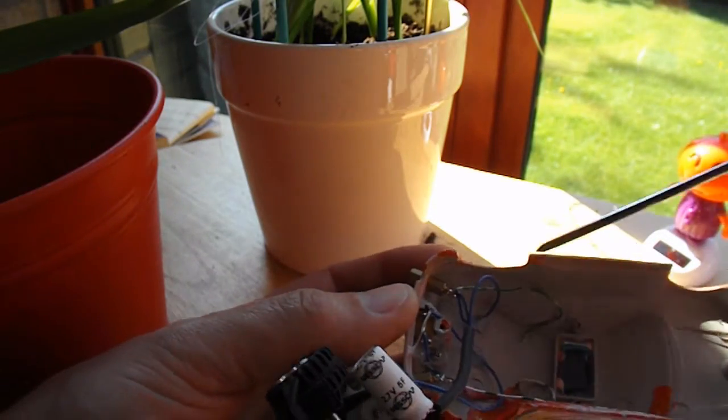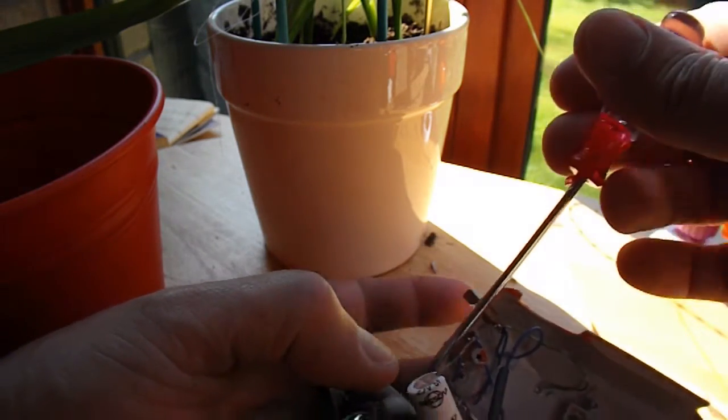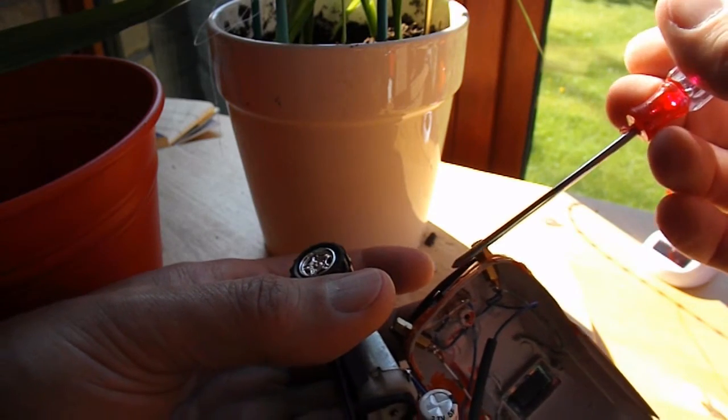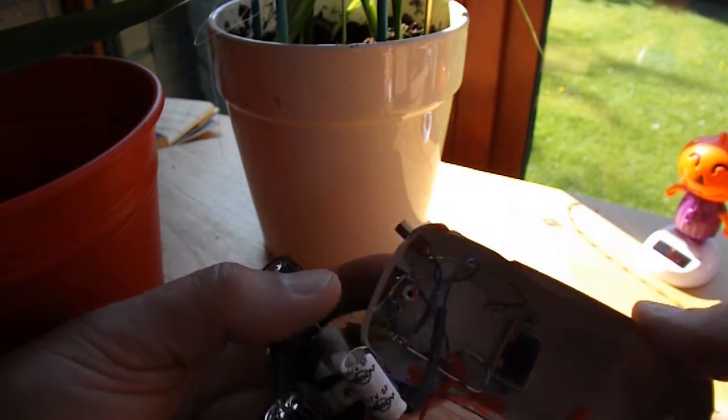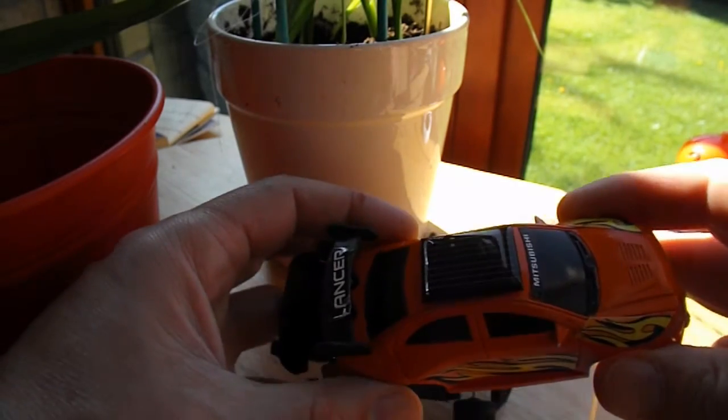And we've got some wires that go to these two connectors on the back, which I can externally charge the capacitor from. And the other wires go through the roof onto the solar panel.